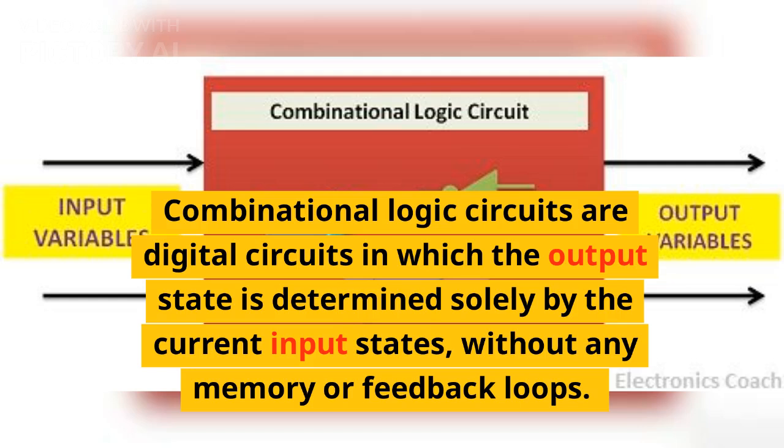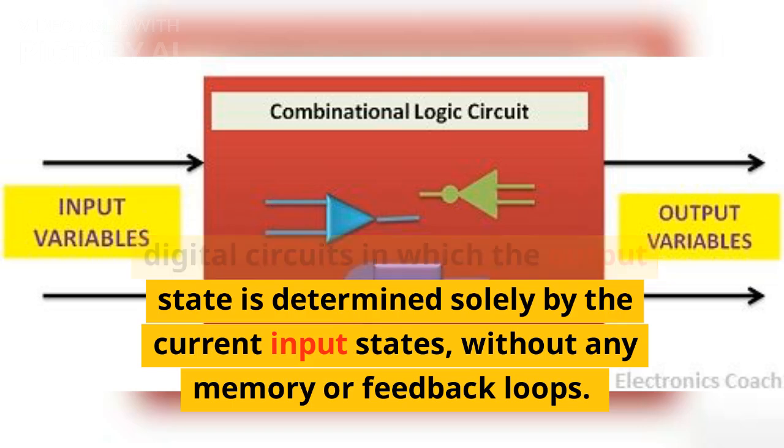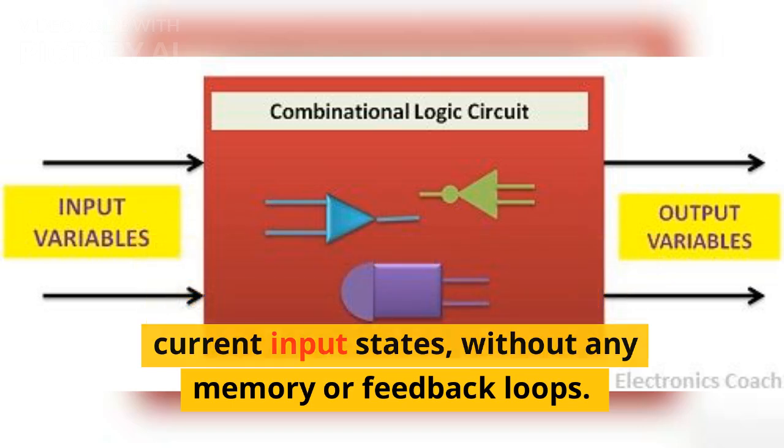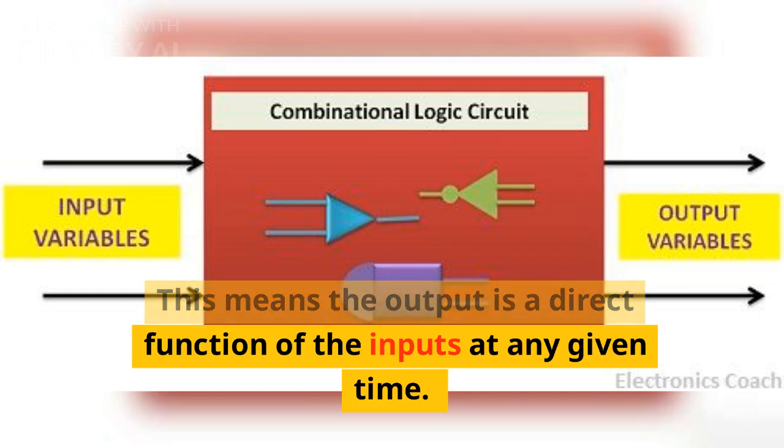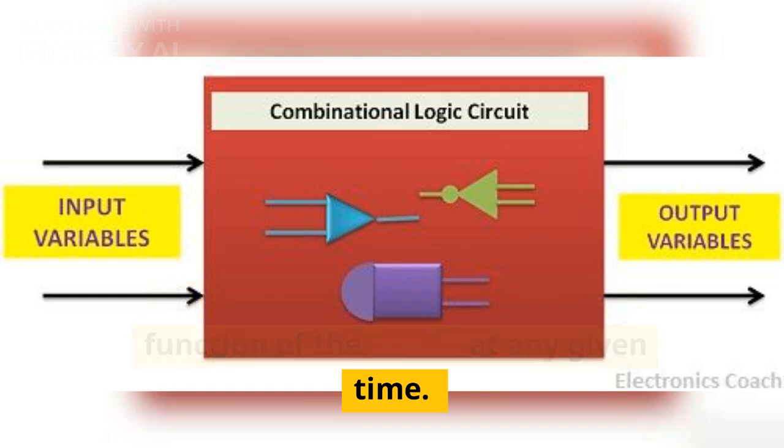Combinational logic circuits are digital circuits in which the output state is determined solely by the current input states, without any memory or feedback loops. This means the output is a direct function of the inputs at any given time.